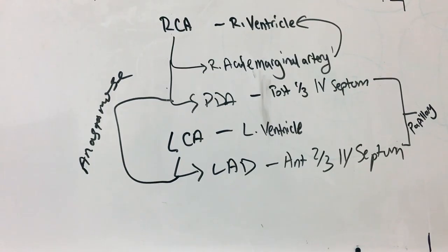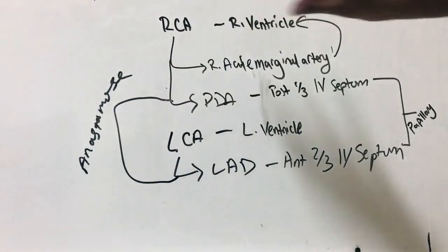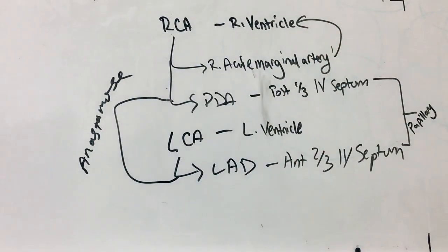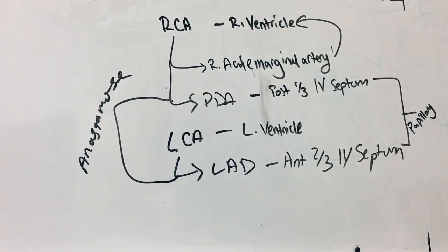No matter what book you look at, no matter where you go, you will always read the same thing — this anastomosis, this function, this layout is always there. Remember: left atrium, if it's enlarged, causes dysphagia or hoarseness of voice. Can it cause both? Absolutely — it can definitely cause both.